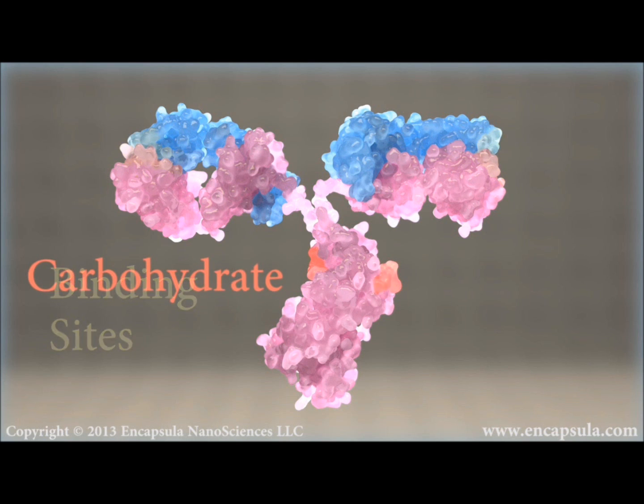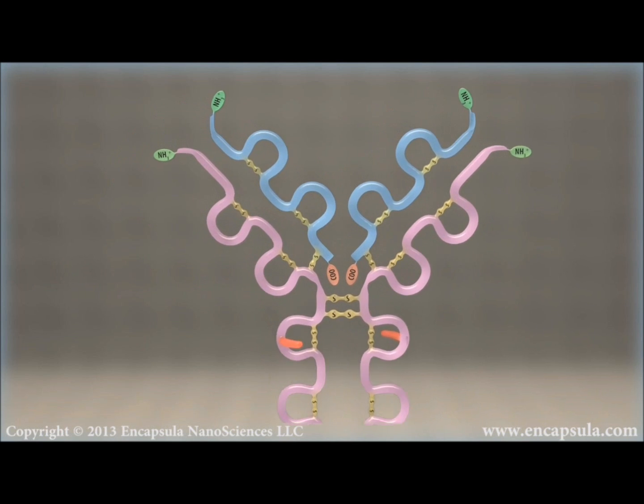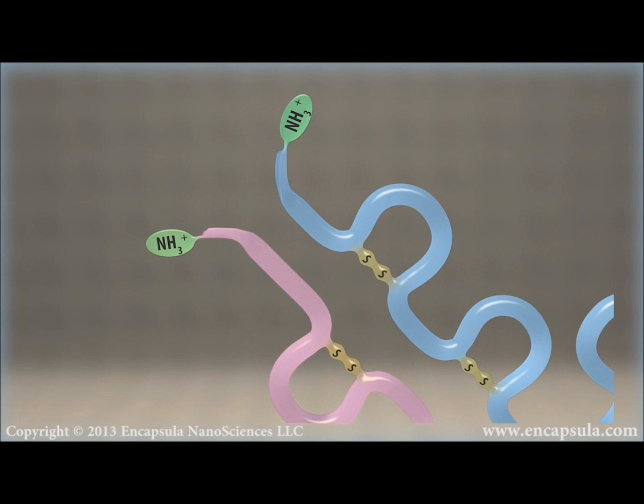Each antibody also contains two carbohydrates within the CH2 domain that act to stabilize the structure within the immunoglobulin G molecule. The N-terminus refers to the start of a protein or polypeptide terminated by an amino acid with a free amine group.